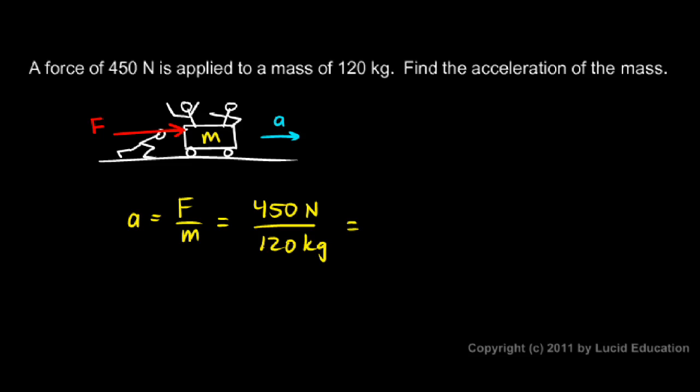450 divided by 120 comes out to 3.75. And if your force is in Newtons and your mass is in kilograms, then your acceleration will come out to be in meters per second squared. So, I still haven't told you what a Newton is. We'll see that next.